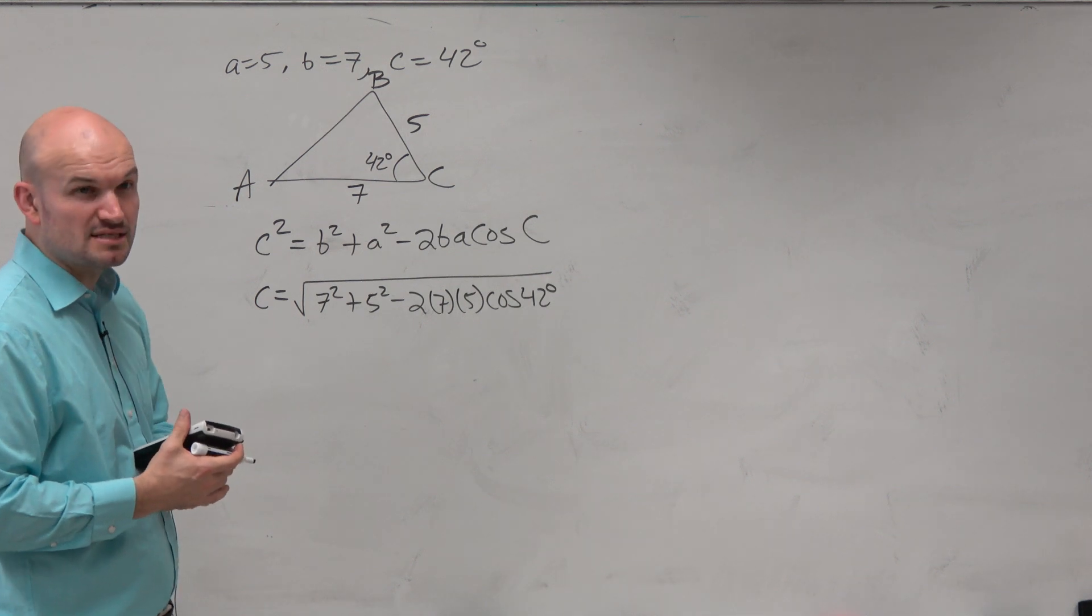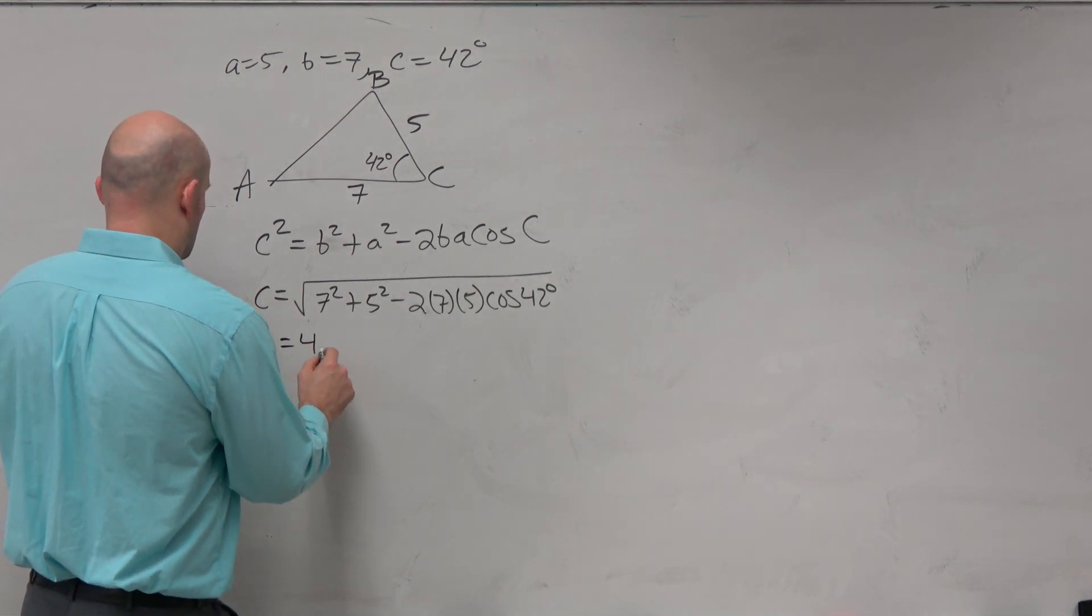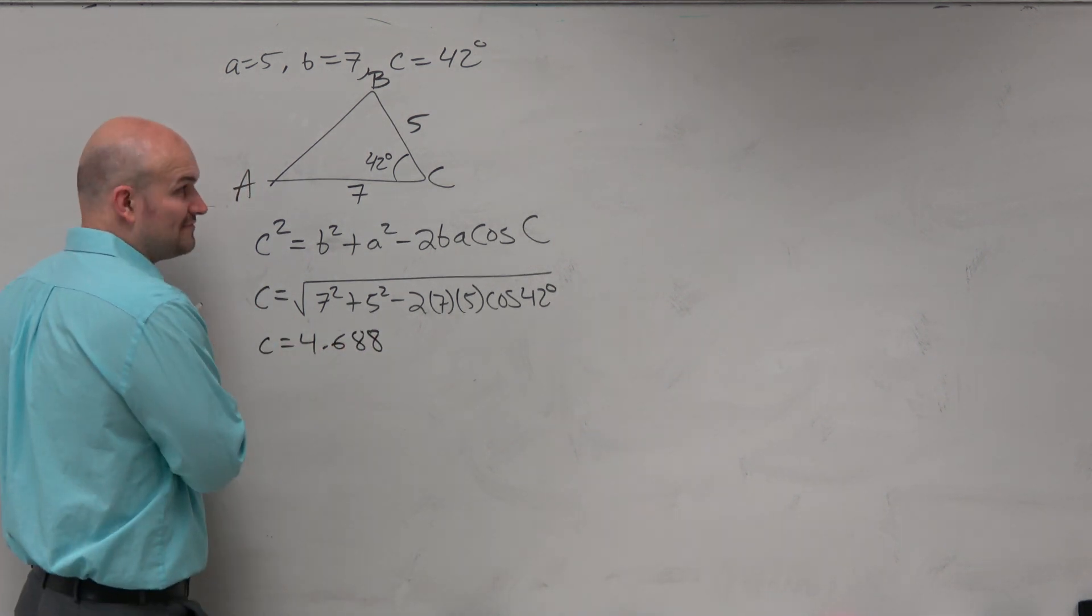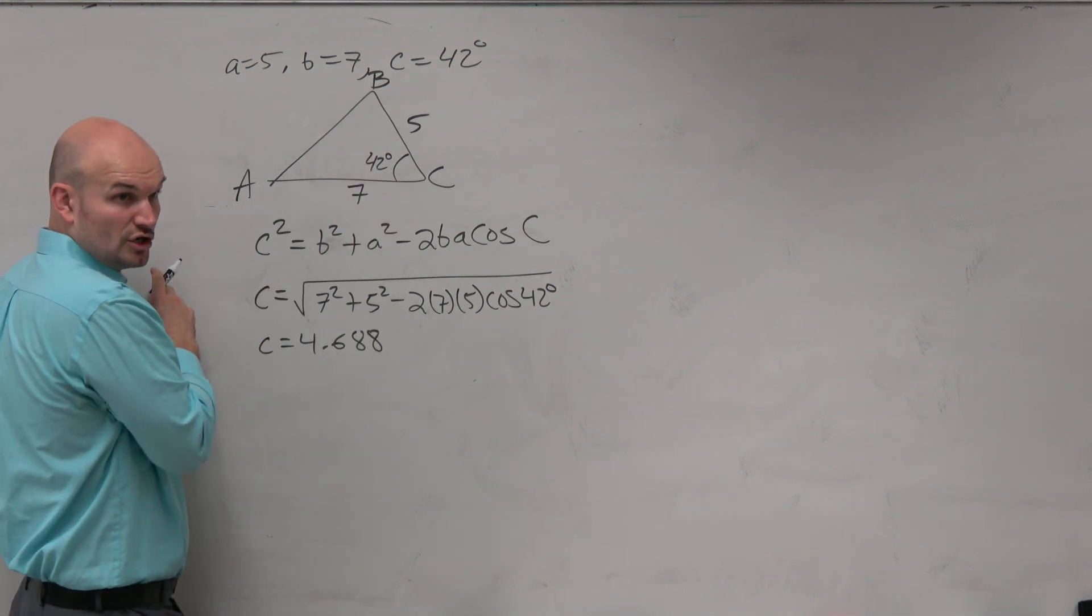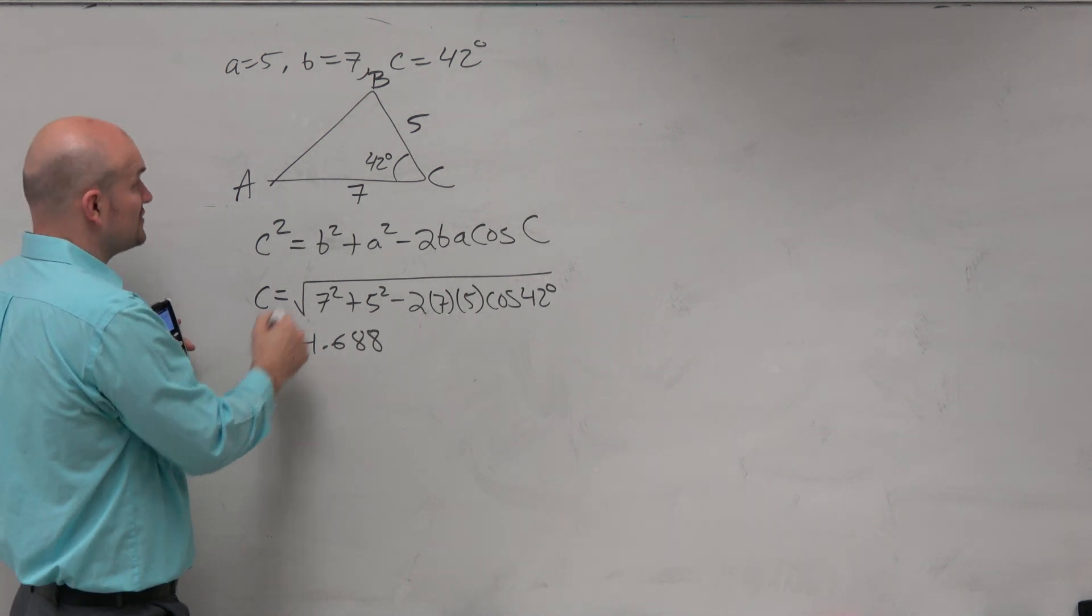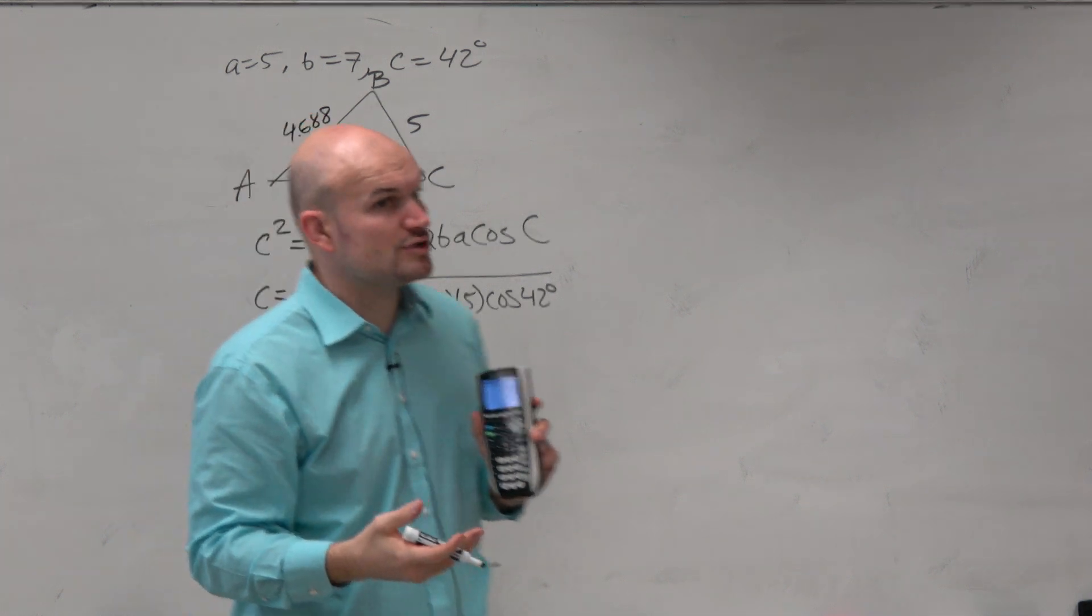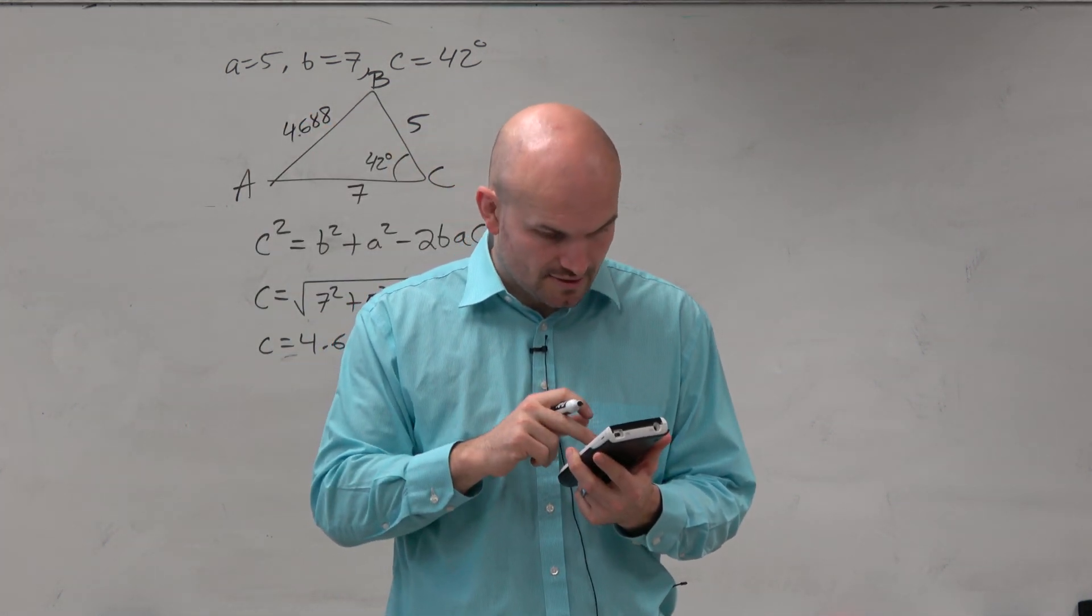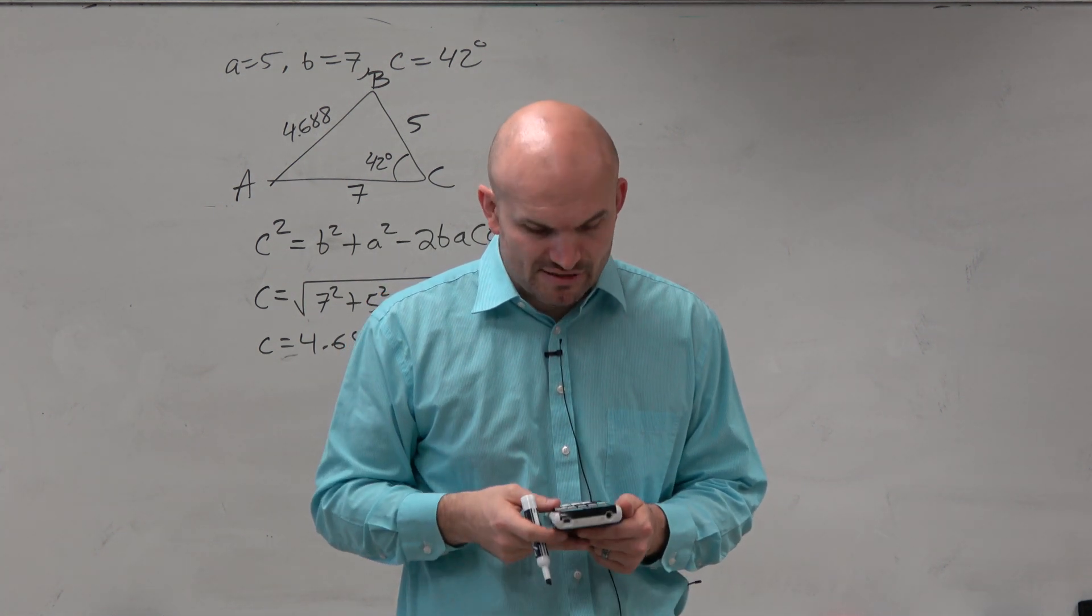Does that make sense? Does that work? Look like it? Yeah. Now, I believe I'm going to have to use this answer again, right, to find one of the angles. Agreed? So I should store this, right? I could say that's my answer for C. But if I'm going to use this, I don't want to use a rounded answer in my calculations. So I'm going to store this as C. So store alpha C. Now it's stored.